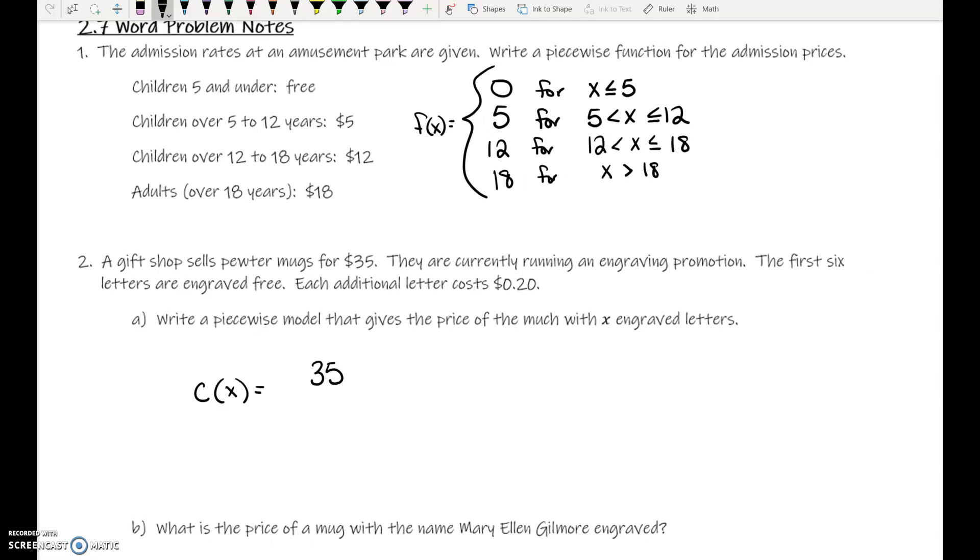Whether you get zero letters engraved, or one, or two, or three, or four, or five, or six. So for x is less than or equal to six, the cost is $35.